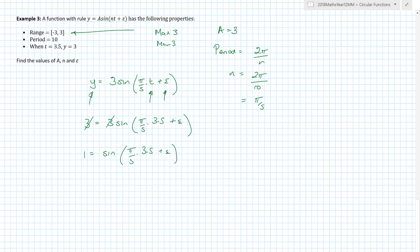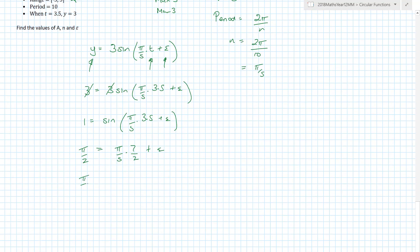When you do the inverse sine of 1 what do we get? Oh my goodness, we get π on 2. Yep, so π on 2 as one of the values. Now there are infinitely many values, lots and lots of values, but then we get π on 2 is equal to π on 5 times 3.5. Well 3.5 is 7 on 2 plus epsilon. Now why did I do that? Just to try and make my life easier.